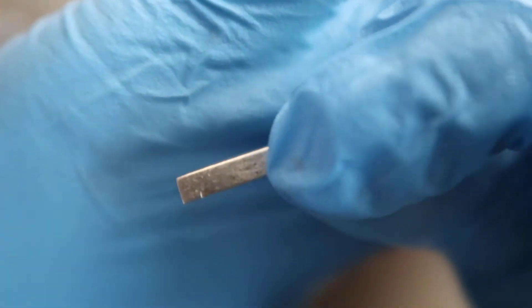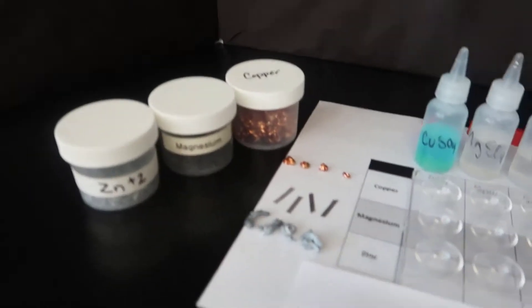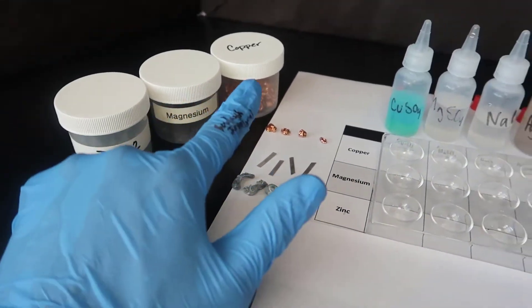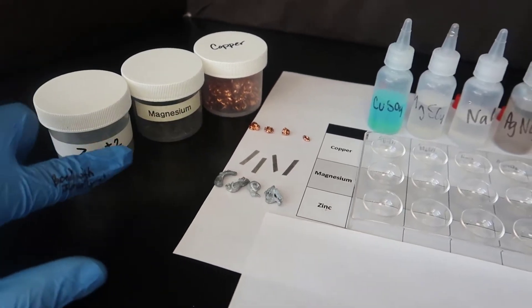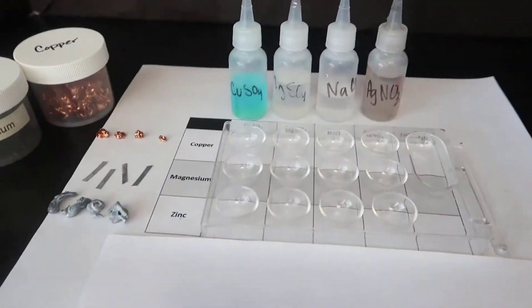So I'm going to do that to all four pieces of the magnesium, as well as the zinc metal. Okay, so I polished the metals as best as I could. So the copper, the magnesium, and the zinc, and then here are my solutions.